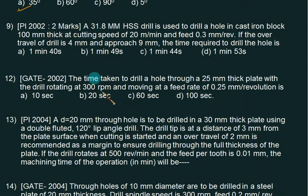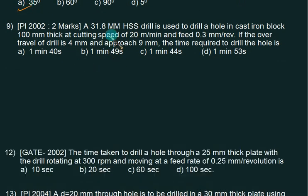Now this is the question where we have a problem. A 31.8mm HSS drill is used to drill a hole in cast iron 100mm thick at a cutting speed of 20m/min. Feed is 0.3mm/rev. Over travel of drill is given, approach is given. First we will calculate the answer using approach.